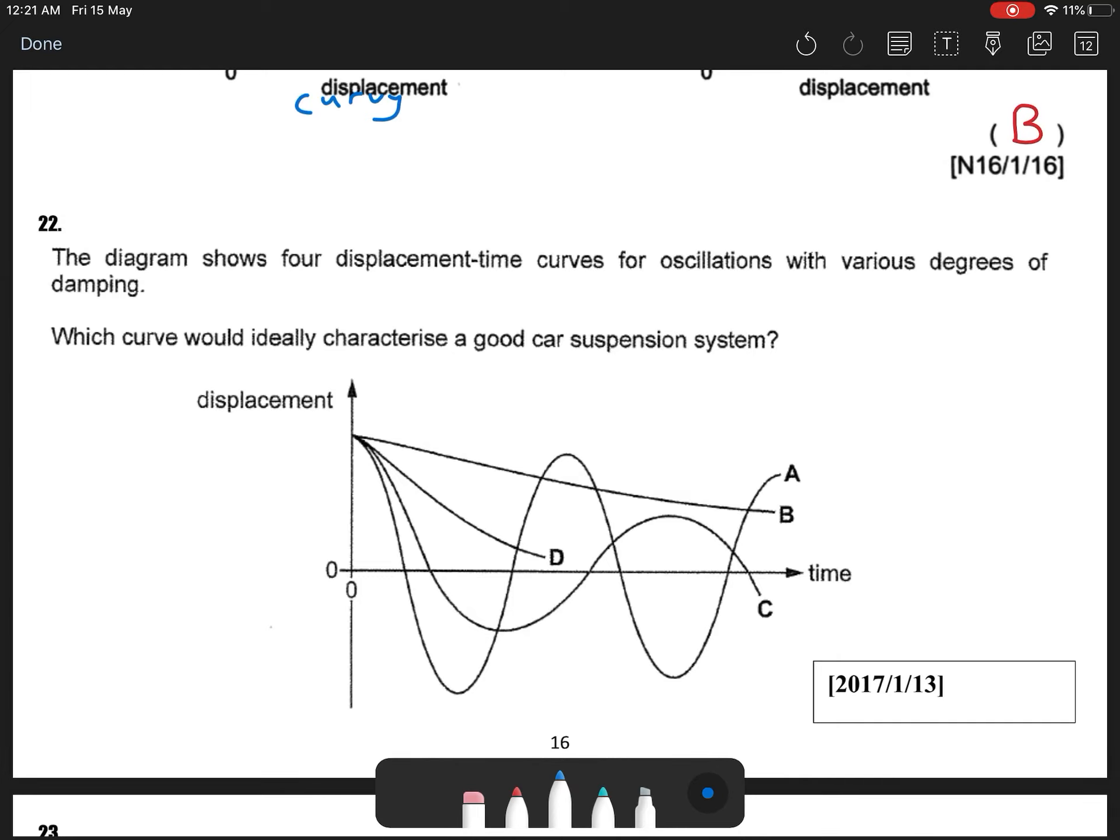For 22T, 2017, the diagram shows four displacement time graphs for oscillation with various degrees of damping. Which curve would ideally characterize a good suspension system?